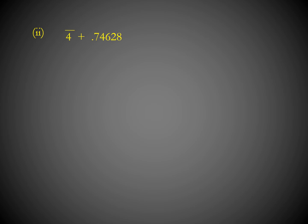The second part involves addition of bar notation. A negative characteristic like −4 is written as 4̄. So 4̄.74628 + 3.42367: separate characteristic and mantissa. Characteristics: −4 + 3 = −1. Mantissas: 0.74628 + 0.42367 = 1.16995. The +1 from the mantissa sum cancels the −1 characteristic, giving a final answer of 0.16995.